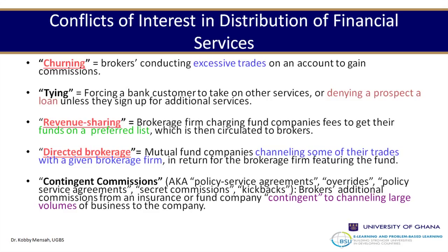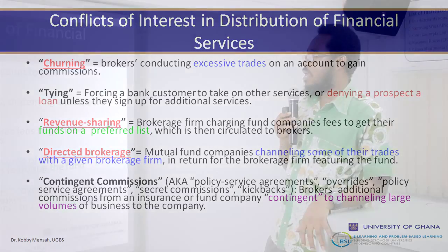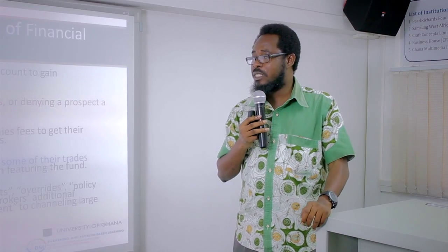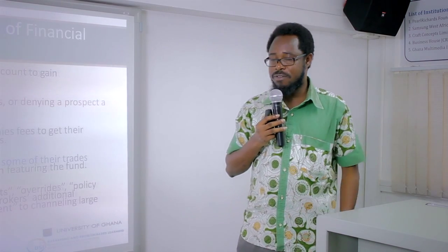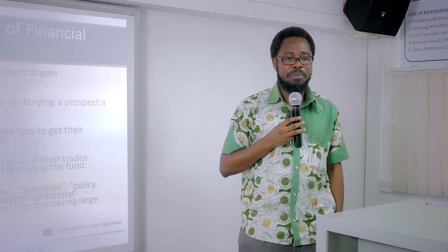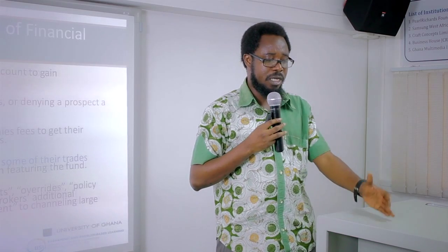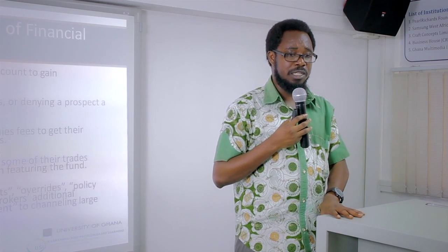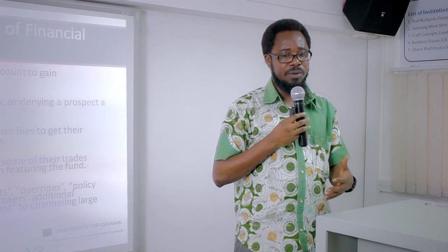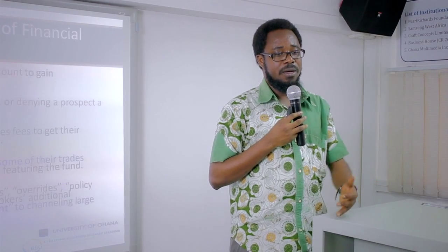Tie-in is where a company or bank forces a customer to take on other services, or denies a prospect a loan unless they sign up for additional services. For example, personal protection plan (PPP) — when you take a loan, you also take PPP as insurance. Some banks can tell you that if you don't take up the PPP policy, your loan may be denied. This is how tying in works — linking a product like insurance to a loan agreement.